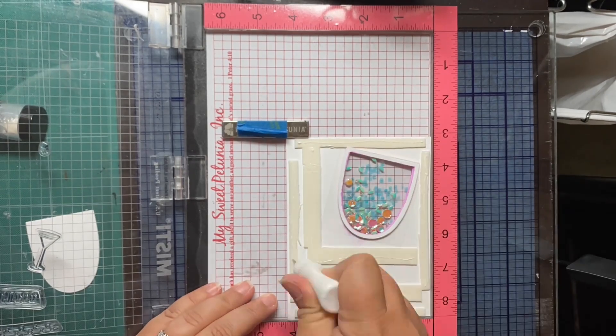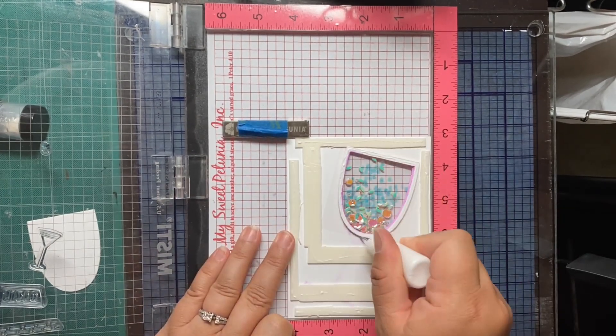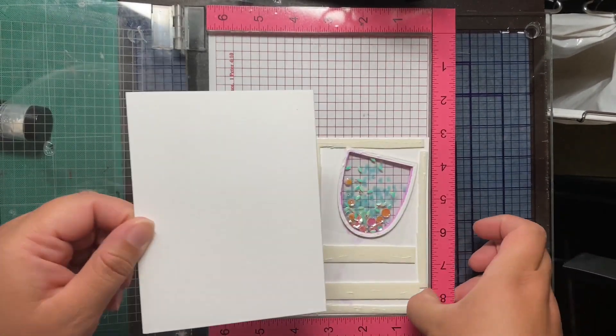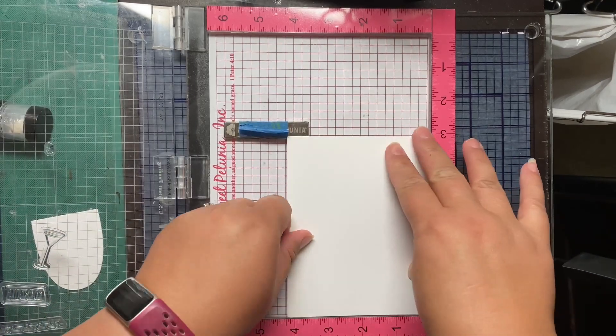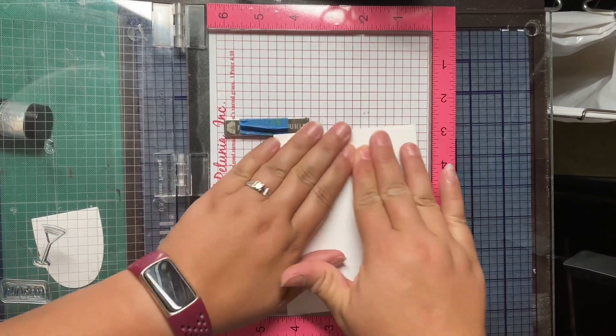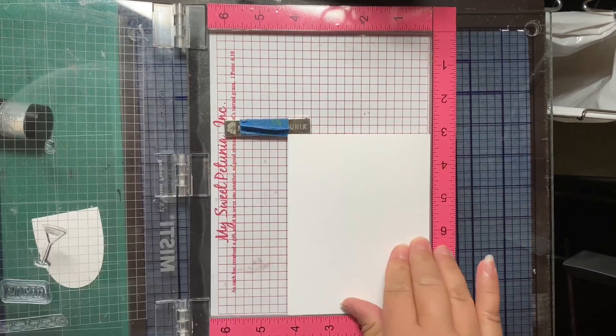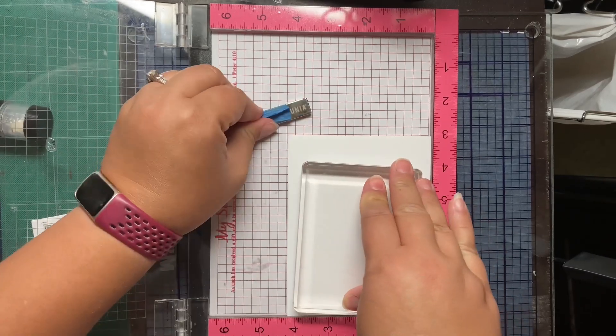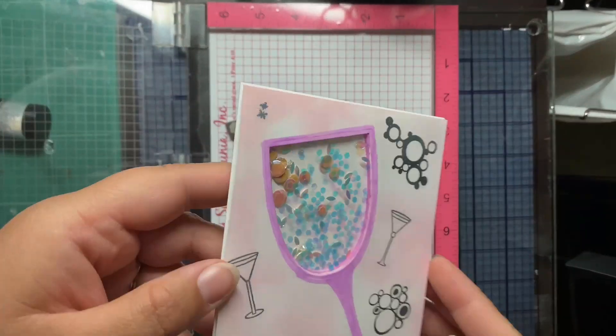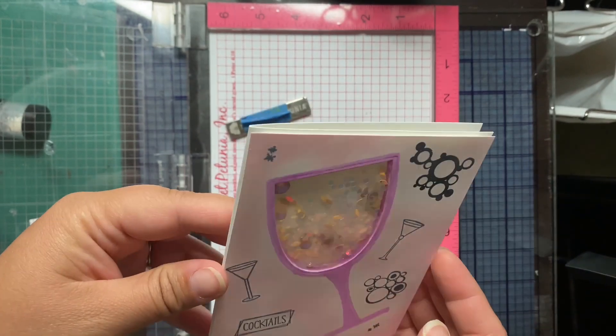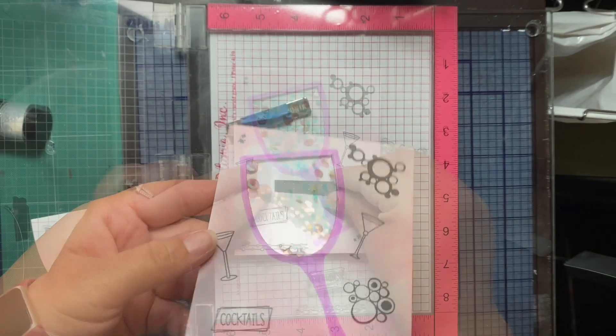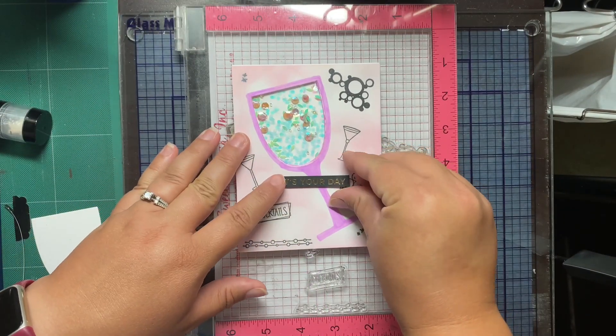And we're back. All right, so now I'm putting liquid glue on the back of my double-sided adhesive. And I have this lined up in the corner of my Misti so that I put it down right. And I'm... This is the actual card. I didn't want to make a bunch of extra bulk, so I made sure that I put the card panel the correct direction.